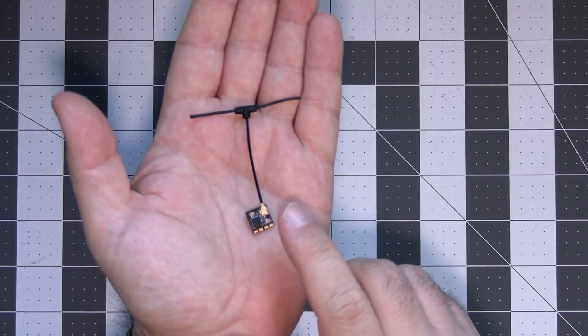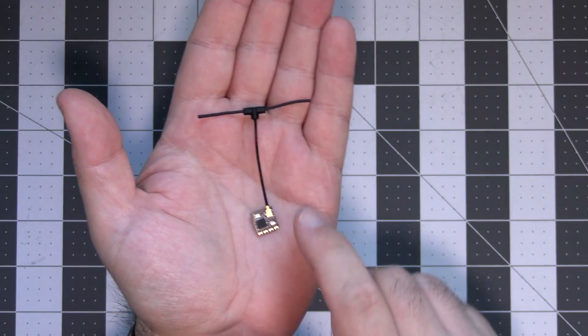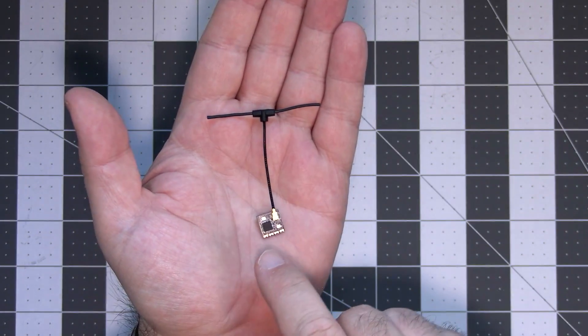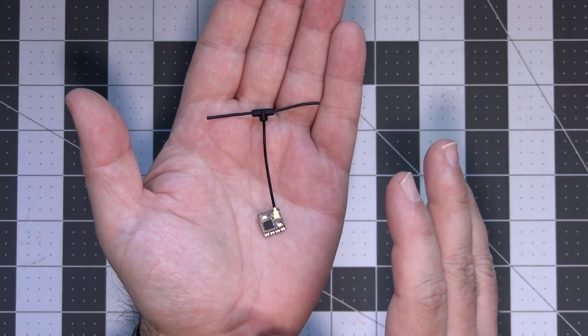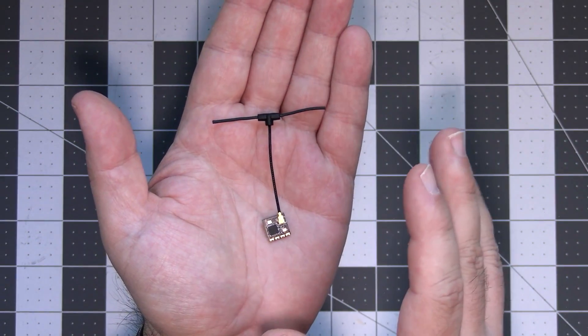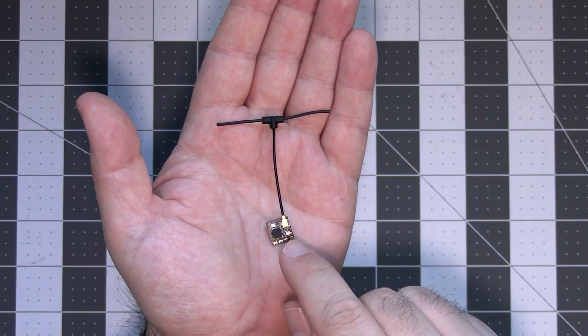Because there is a very simple way of making the ExpressLRS 2.4 GHz antenna that is much smaller than this one, does not require you to make any modification to the receiver and can be made out of basically almost everything that has the IPEX connector at the end.